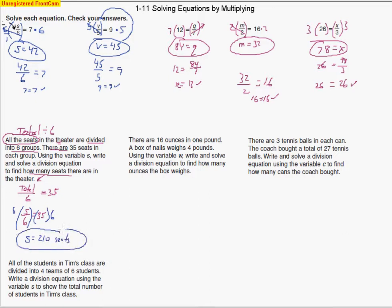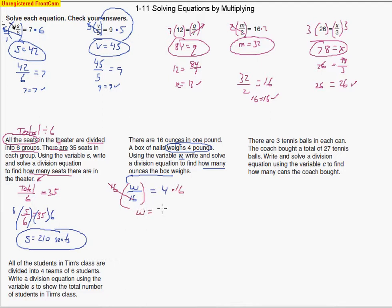There are 16 ounces in 1 pound. A box of nails weighs 4 pounds. Using variable W, we write a division equation to find how many ounces the box weighs. The total number of ounces divided by 16 — since 16 ounces equals 1 pound — tells us the number of pounds. The weight is 4 pounds, so W over 16 equals 4. We multiply both sides by 16, and W equals 64 ounces.